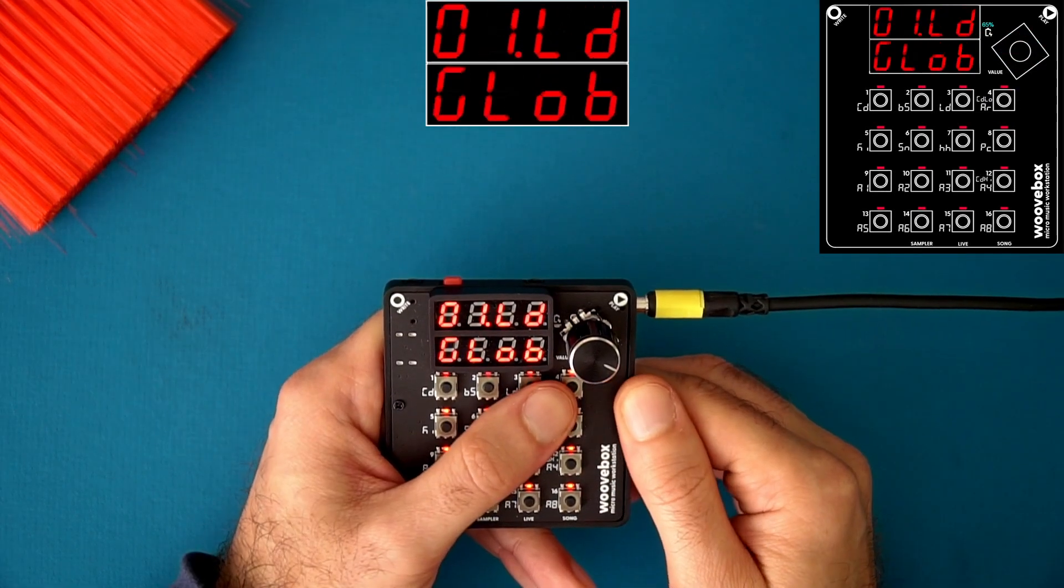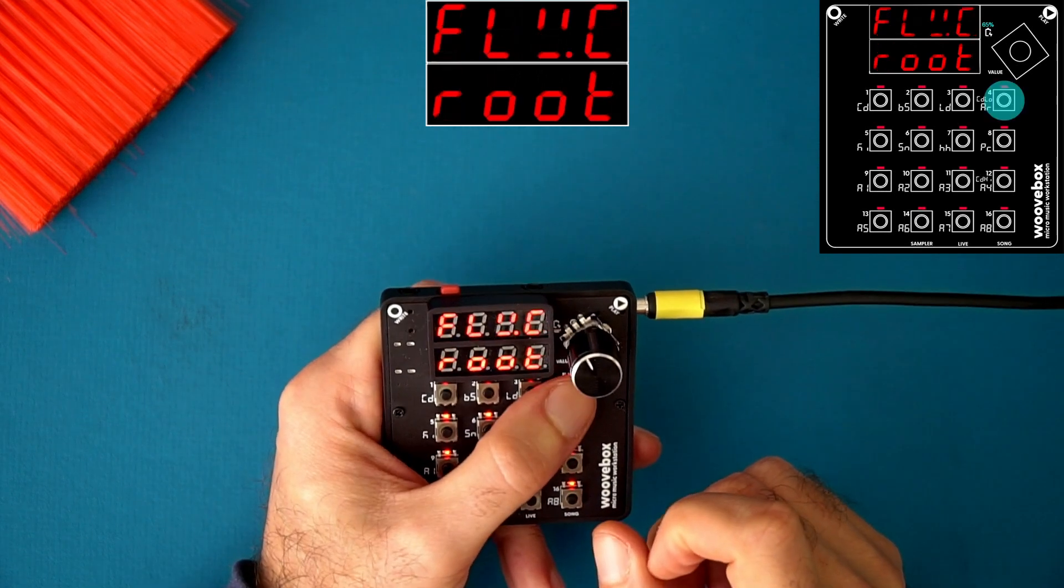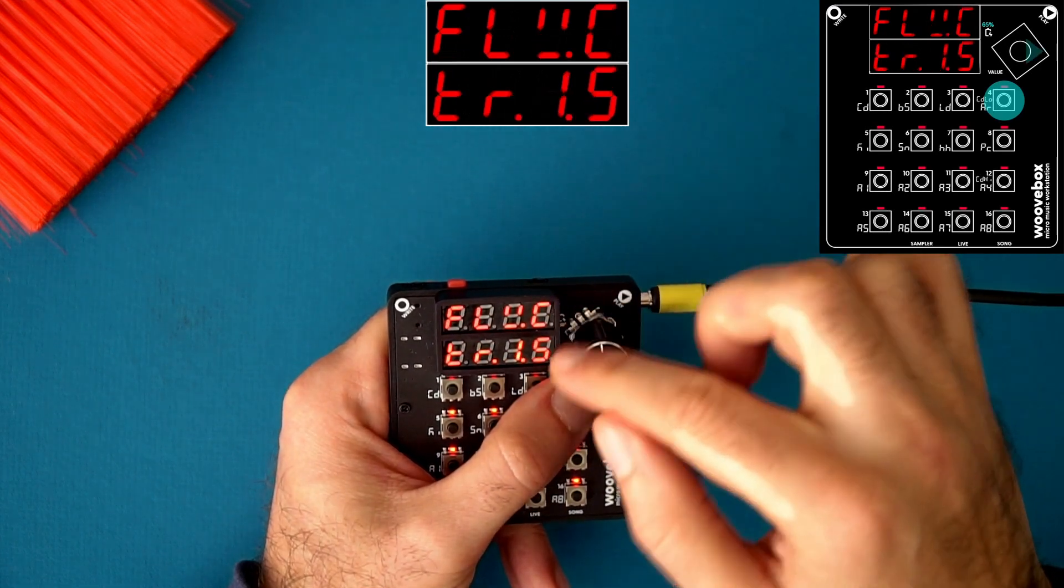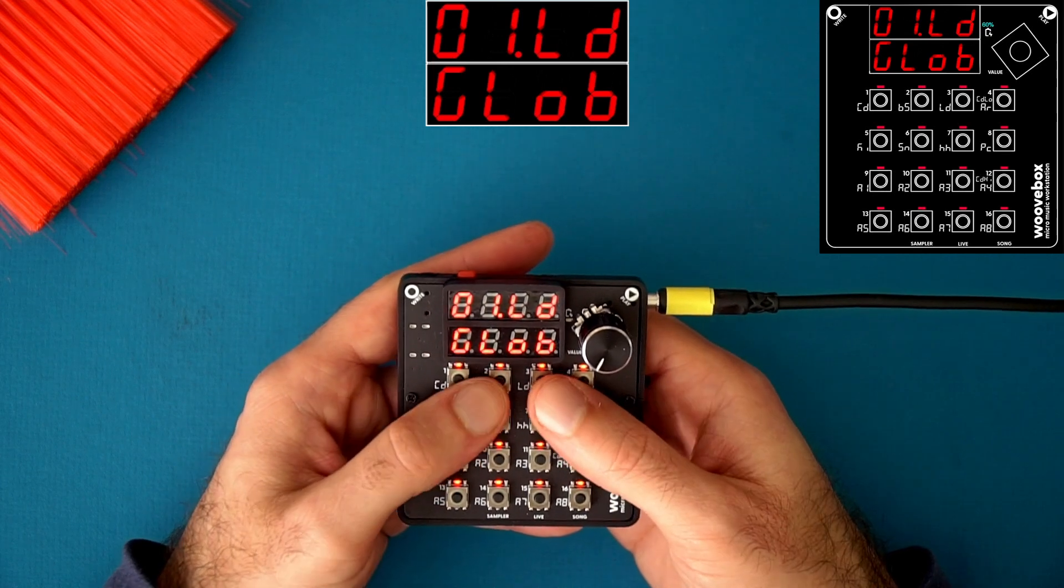Next, we now have root and fifth chord follow options. On the chord follow menu in the global page, if I hold down and go past root, you now see the fifth options. More options in the chord follow menu is always welcome.